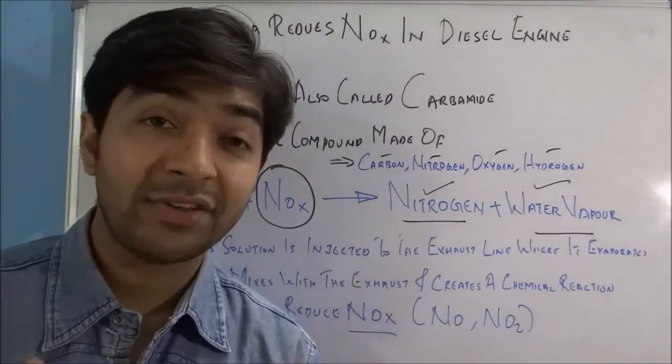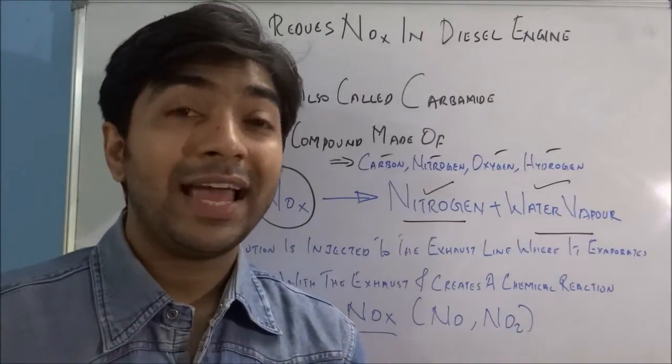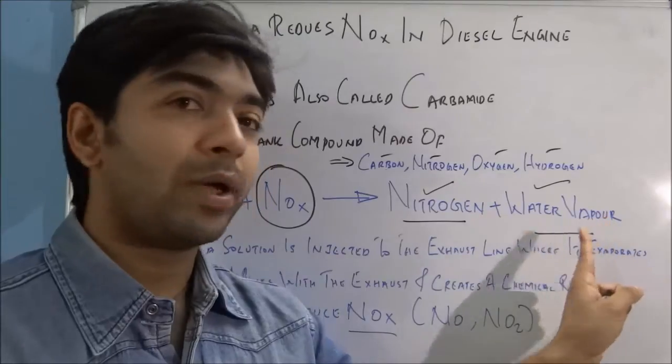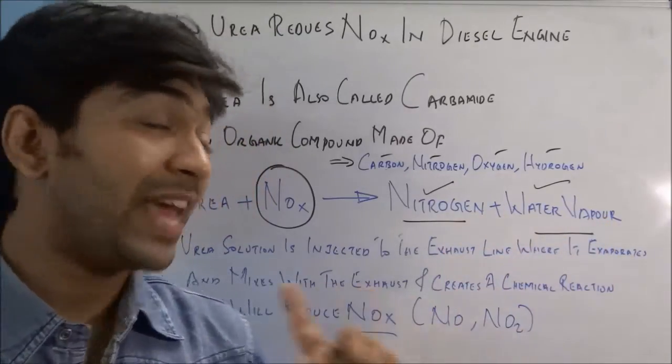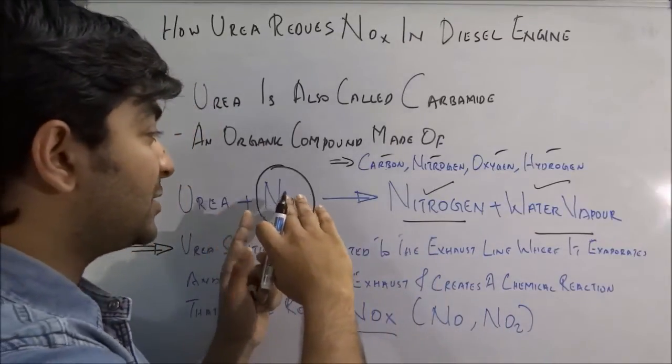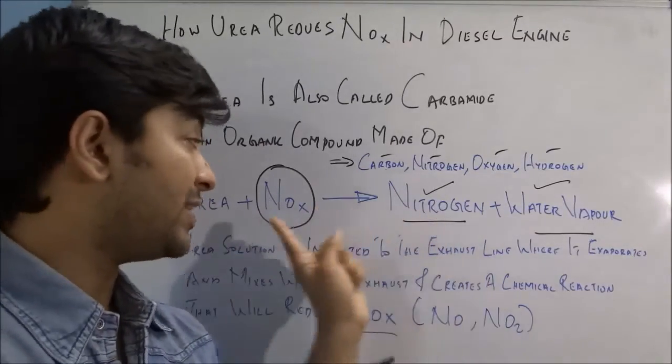78 percent of our air is nitrogen, and it's also divided into water vapor which is not harmful. So that's how the urea initiates the chemical reaction which splits the NOx—nitrogen oxide—into nitrogen and water vapor, which is not a harmful component.